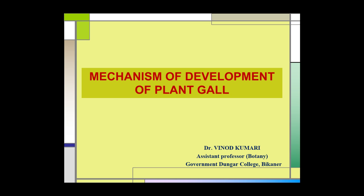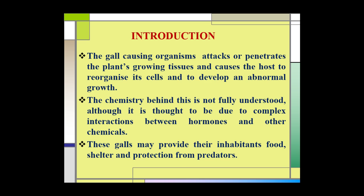Mechanism of Development of Plant Gall. In this e-lecture, we will study about various hypotheses proposed for the formation of plant galls, four phases of development of plant gall, and the biochemical changes that occurred in the gall tissue. The gall-causing organisms attack or penetrate the plant growing tissues and cause the host to reorganize itself and to develop an abnormal growth, and this abnormal growth is called the gall.